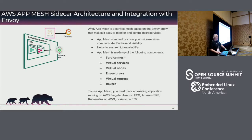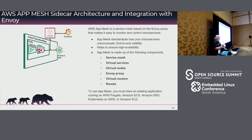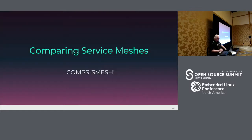AWS App Mesh uses Envoy as the foundation — it's like every other Envoy implementation out there. But you have to use Fargate or ECS with it; they won't let you use it outside of that environment. So it locks you into working with AWS, which is their goal — to make everything live there.